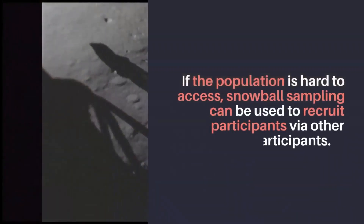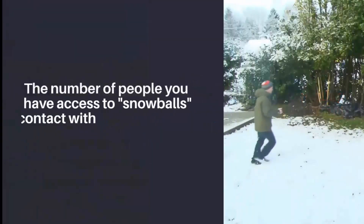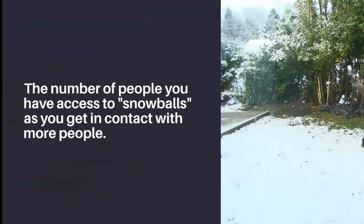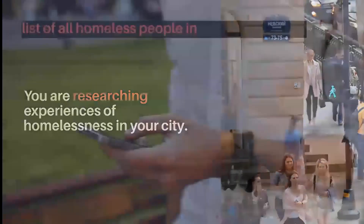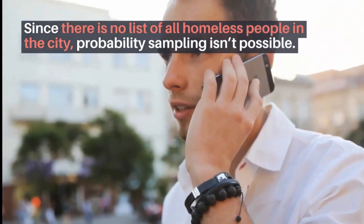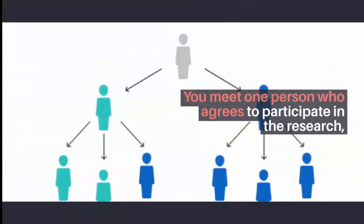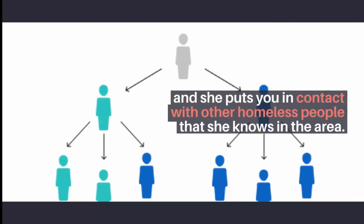4. Snowball sampling. If the population is hard to access, snowball sampling can be used to recruit participants via other participants. The number of people you have access to snowballs as you get in contact with more people. For example, you are researching experiences of homelessness in your city. Since there is no list of all homeless people in the city, probability sampling isn't possible. You meet one person who agrees to participate in the research, and she puts you in contact with other homeless people that she knows in the area.